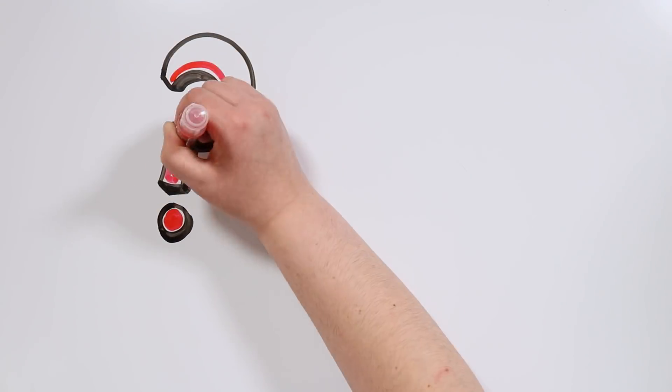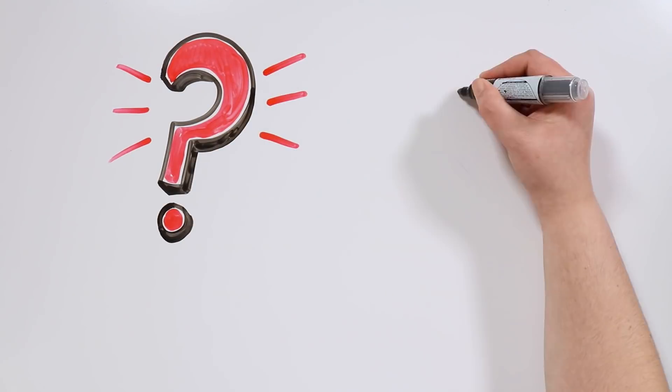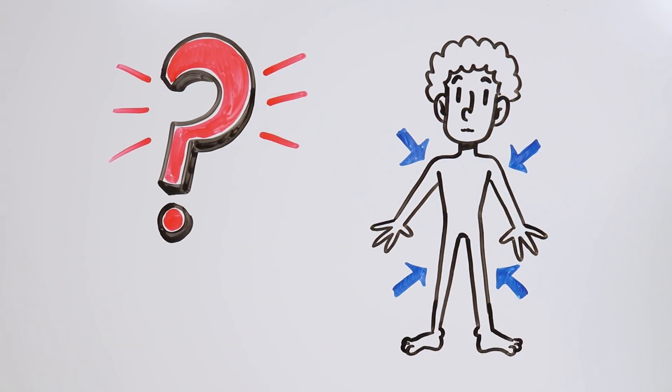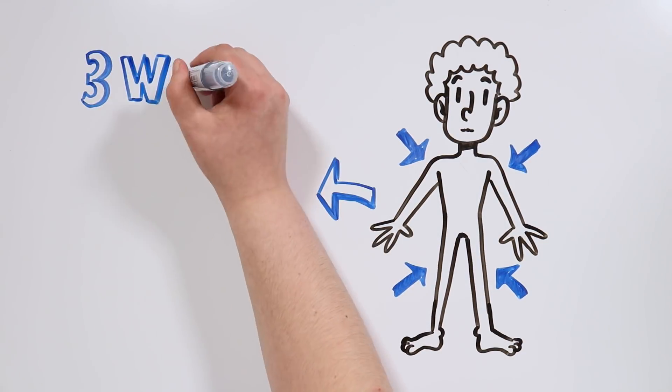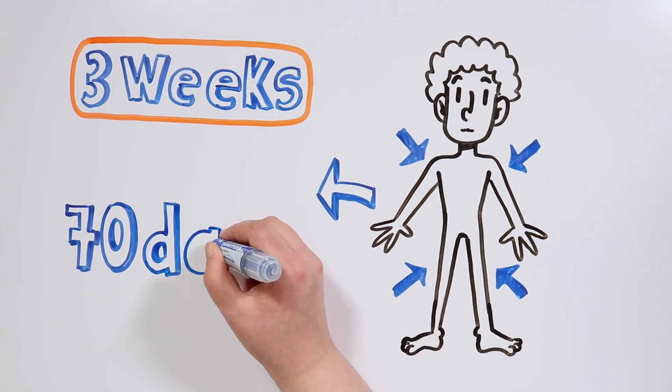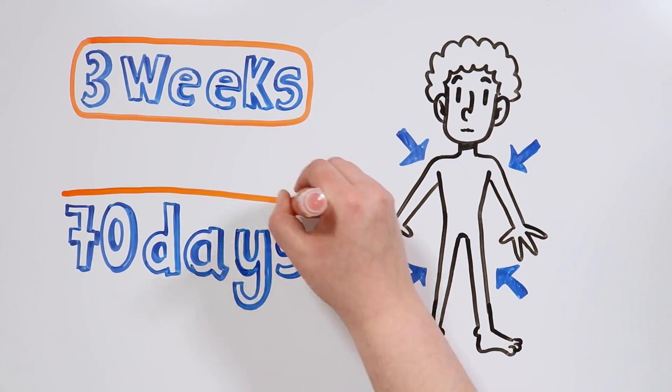So what is the limit our bodies can resist? That will depend on the amount of body fat in our bodies and the liquids we consume. In some cases, it's possible to fast for three weeks straight, and the maximum registered case is of 70 days without eating!